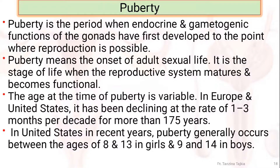Puberty is the period when the endocrine and gametogenic functions of the gonads first develop to the point where reproduction is possible. This also means the onset of adult sexual life — it is the stage of life when the reproductive system matures and becomes functional. The age at the time of puberty is variable. In Europe and the United States, it has declined at the rate of 1 to 3 months per decade for more than 175 years.